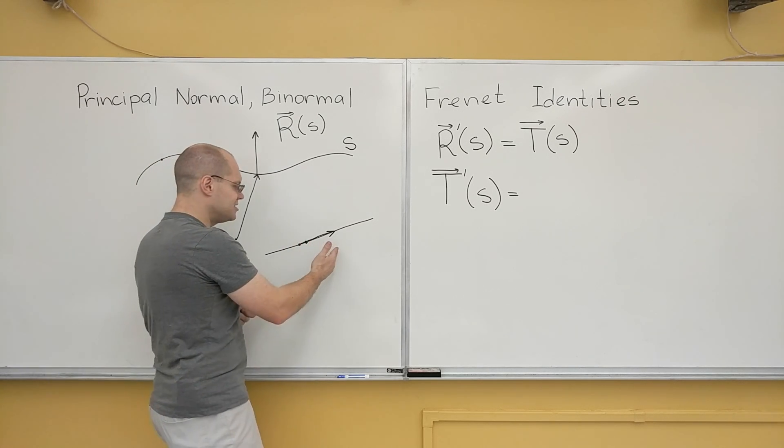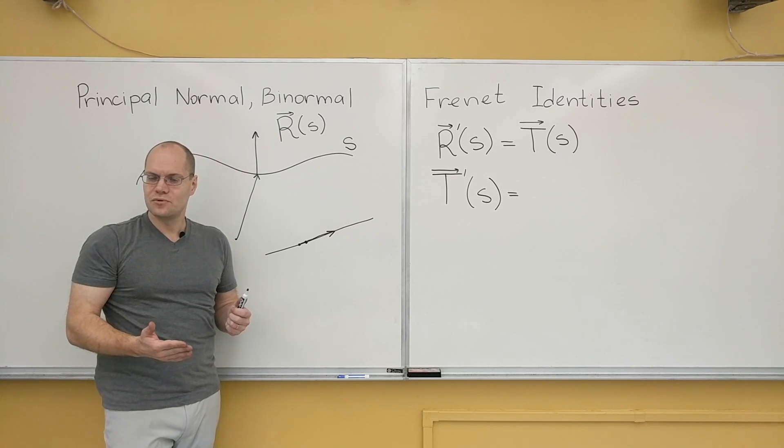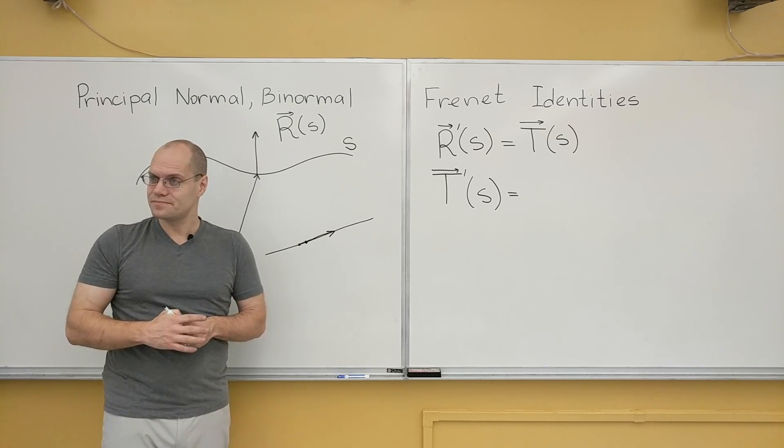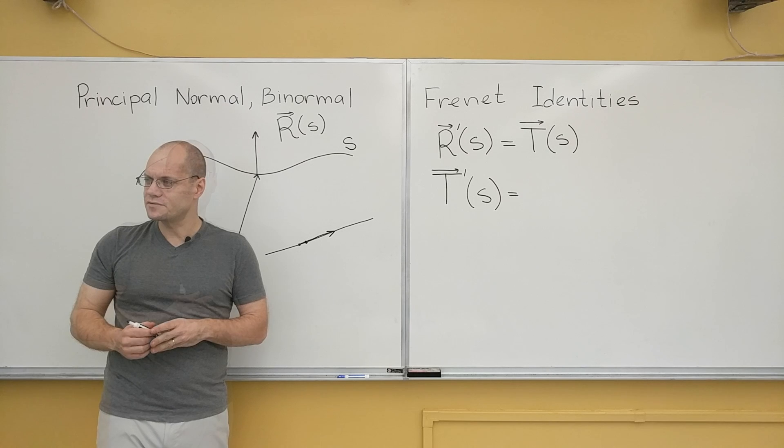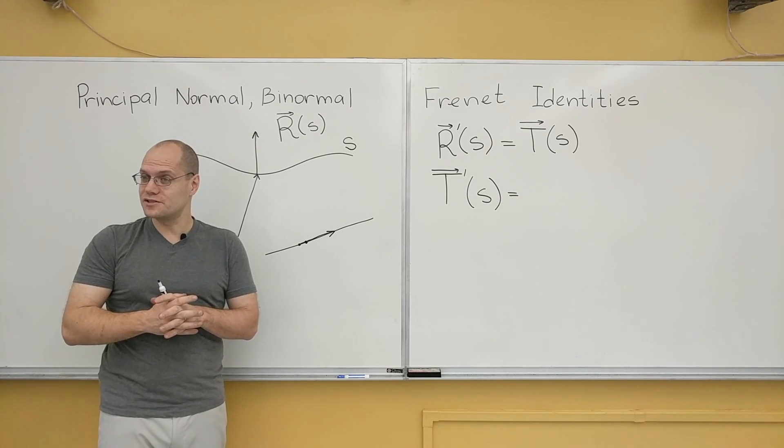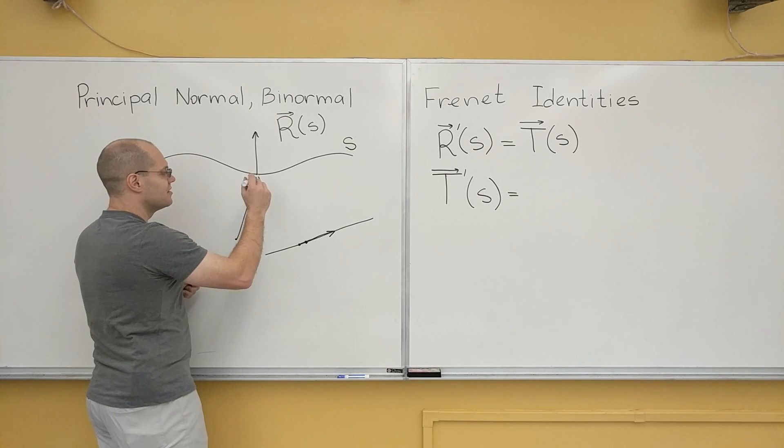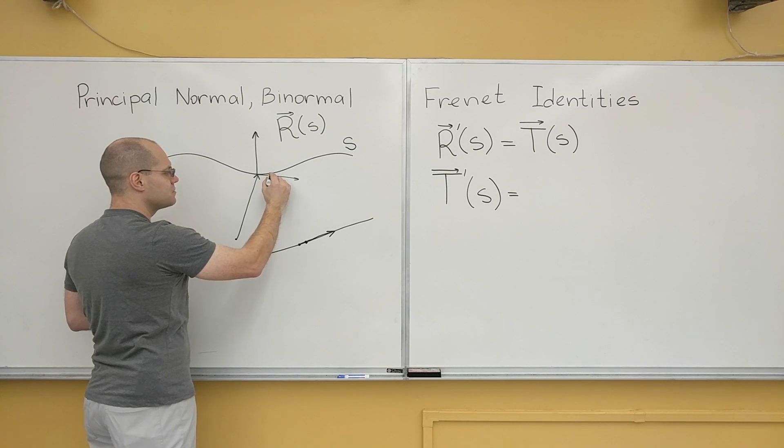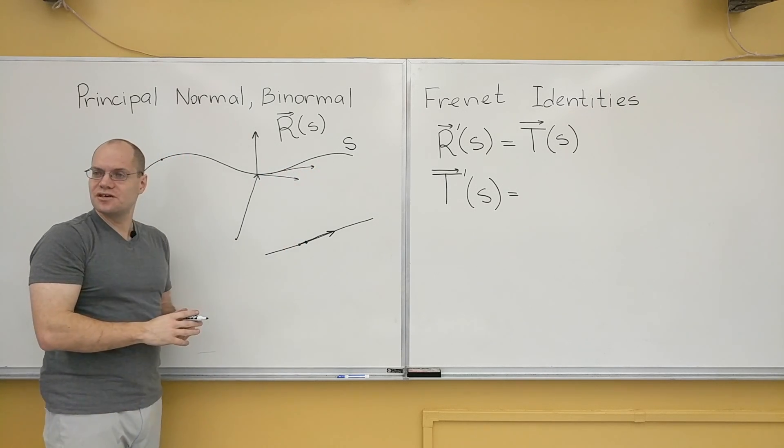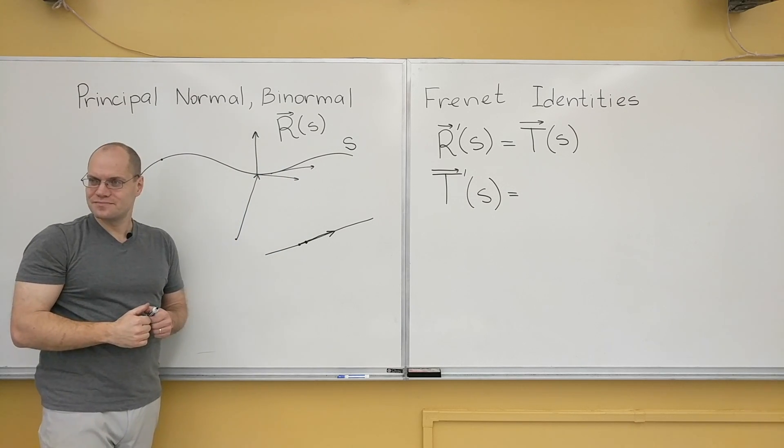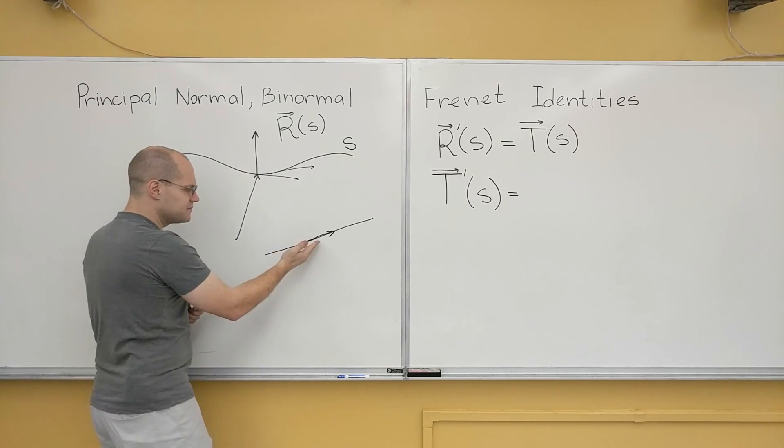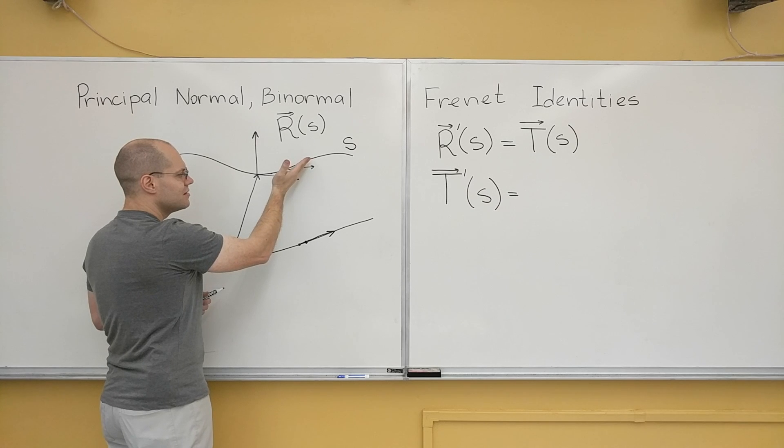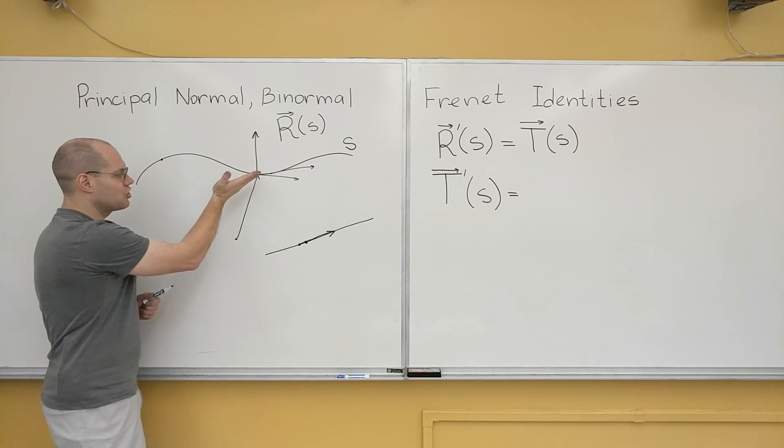So what makes T of s vary? What makes it change? What makes it be not constant? It's constant length. But what makes it not a constant vector? Curvature. The line curves. So what makes the unit tangent not constant for this line is the fact that from this point to this point, the direction changes because the curve curved. And if it curves not at all, then the tangent changes not at all. And if it curves a little, then the tangent will change a little. And if it curves a lot, if it did this, right?